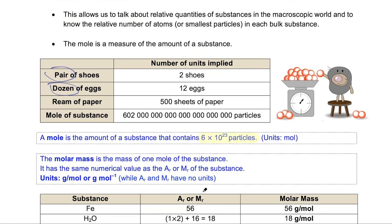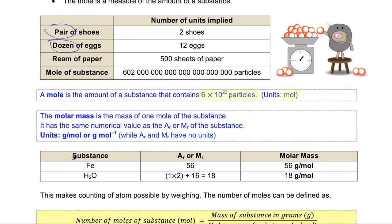We now introduce the units for the number of moles and that is mol. The molar mass of a substance is the mass of one mole of the substance and has the same numerical value as the AR or MR of the substance. For example, iron, if we look at the periodic table, the relative atomic mass for iron is 56. One mole of iron atoms have a mass of 56 grams. So the molar mass is 56 grams per mole.